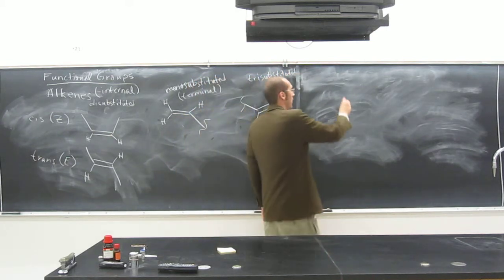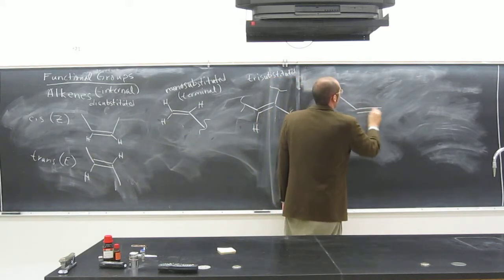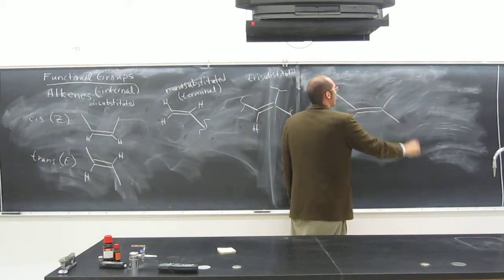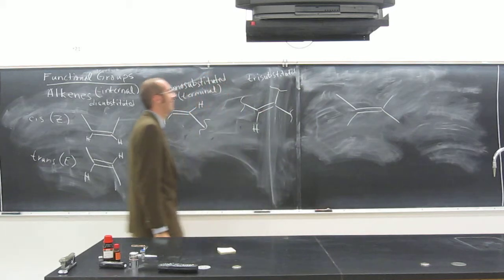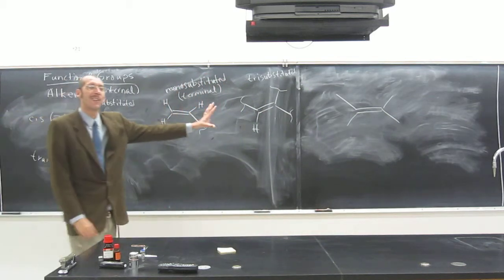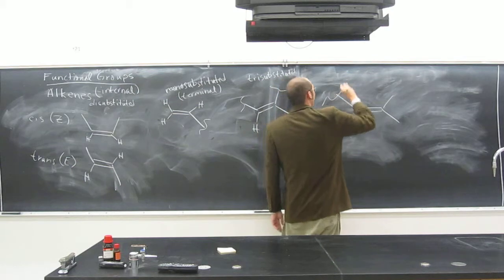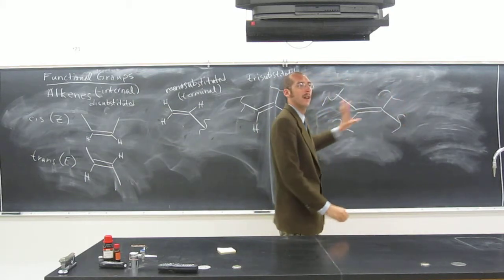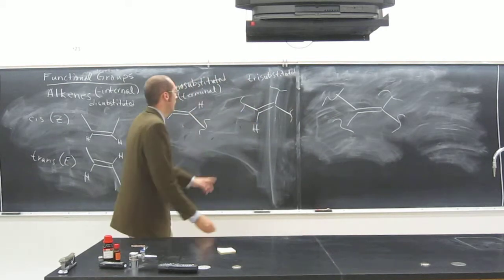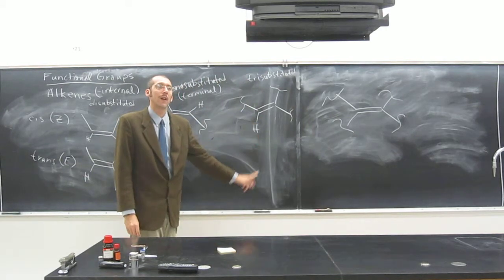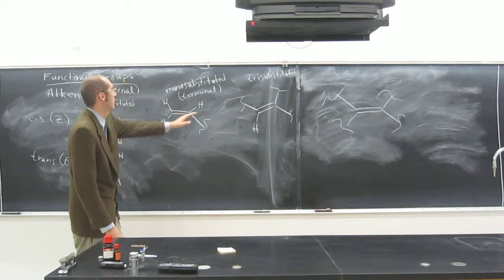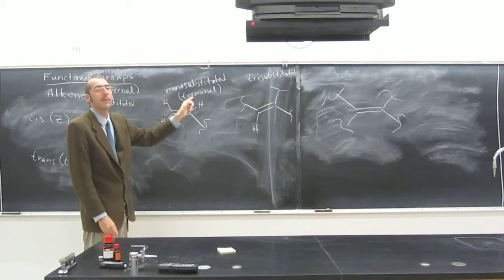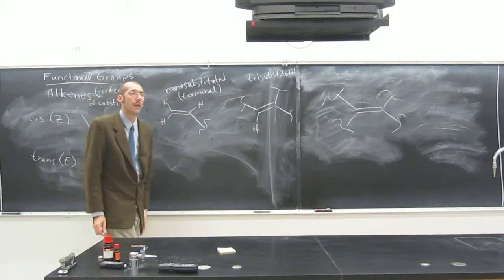And of course we can also have tetra-substituted. Very good. Tetra-substituted. And is that a terminal alkene? No. It's an internal one. Why? Because we can add something onto all of those sides, right? Remember, we can't add something to a hydrogen. We can only make one bond. So here, the only type of terminal alkenes are monosubstituted, right?